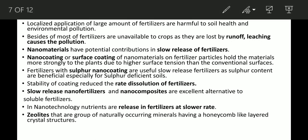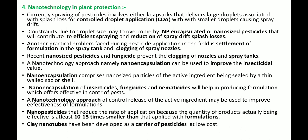The fourth application is nanotechnology in plant protection. Currently, spraying of pesticides with larger droplets is associated with splash losses and spray drift. Controlled droplet application (CDA) is used in nanotechnology with smaller droplets. Nano-encapsulated or nano-size pesticides contribute to efficient spraying and reduction of spray drift and splash losses, which are major problems affecting efficacy, efficiency, durability, and stability of pesticides.